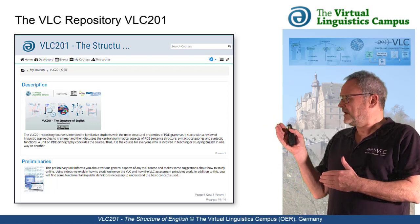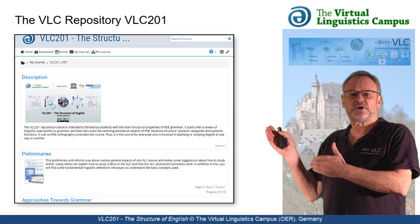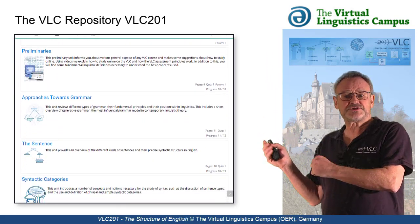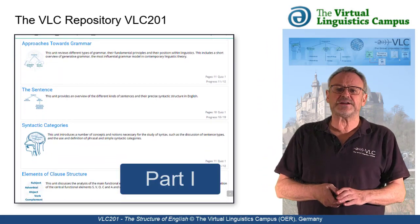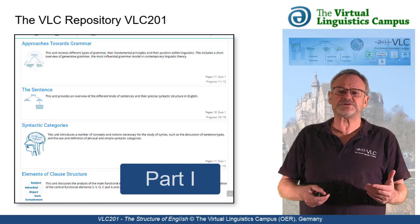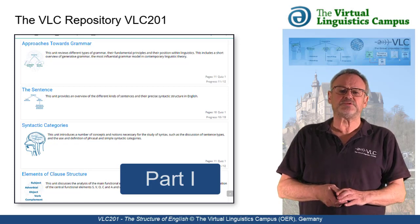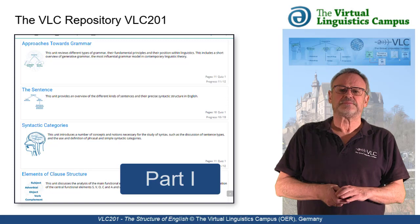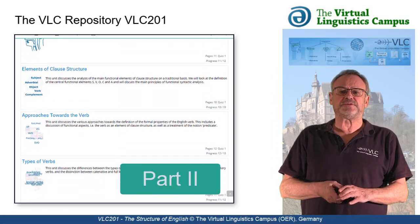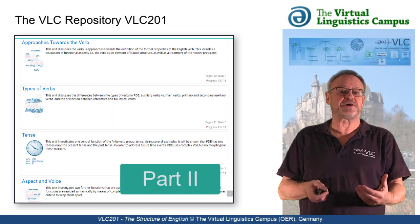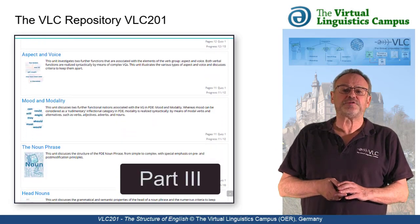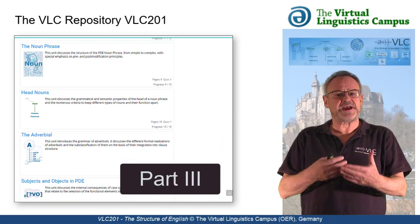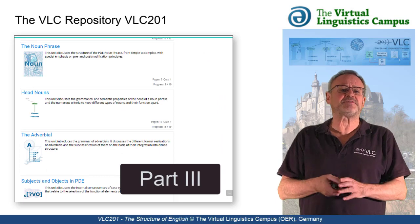Here are the current content units of VLC 201. Part 1 discusses the underlying concepts of grammar, that is syntactic categories and functions. Part 2 is dedicated to the English verb and its formal and functional properties. And the third part focuses on noun phrases, head nouns and adverbials.